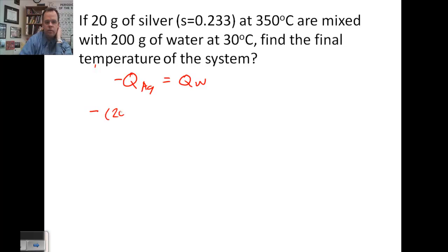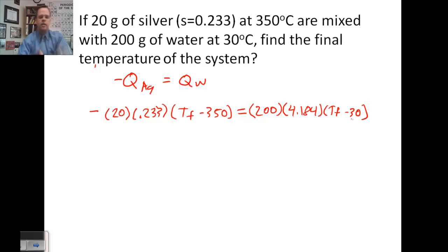So minus 20, specific heat 0.233, final temperature minus 350, equals 200 times 4.184 times final minus 30. Let's simplify this a little bit. 20 times 0.233, negative 4.66, T final minus 350.